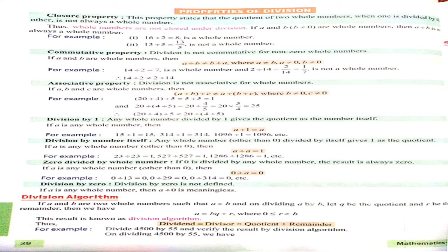Now next, commutative property: division is not commutative for non-zero whole numbers. If A and B are whole numbers, then A divided by B is not equal to B divided by A. See the example: 14 divided by 2 equals 7, and 2 divided by 14 equals 1/7. So in both conditions our answers are not equal.